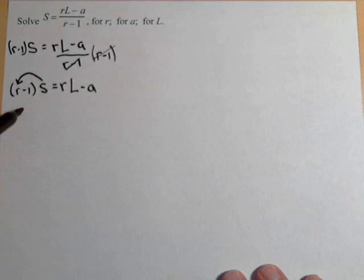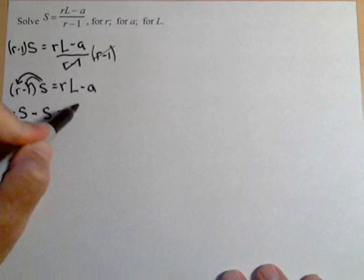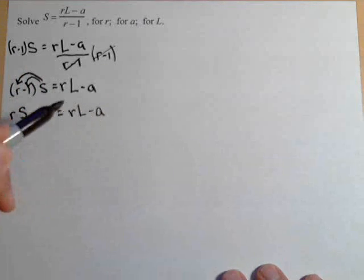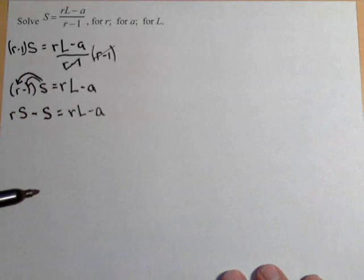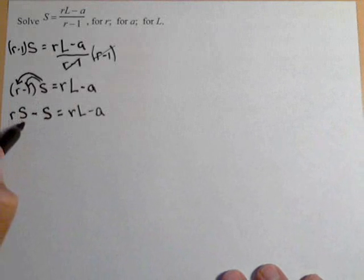First, we'll get R times S, and then S times one is just S, but it's negative, so it's minus S, equals RL minus A. We might be able to use some of this work in these other problems.